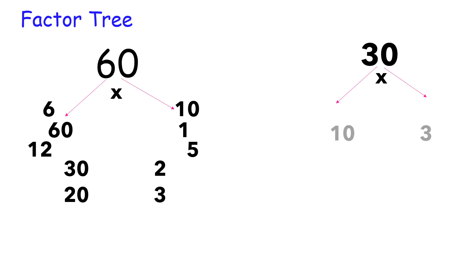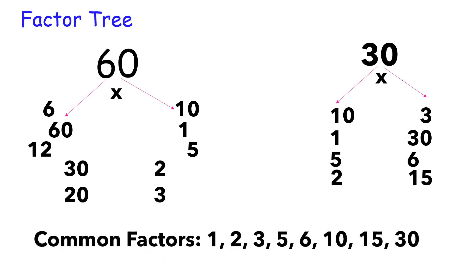Another step is using factor tree. So, we have 60. Get the factors of 60. We have 6 times 10, 60 times 1, 12 times 5, 30 times 2, 20 times 3. And 30, get the factors of 30. List all the factors of 30 we have: 10 times 3, 1 times 30, 5 times 6, and 2 times 15.